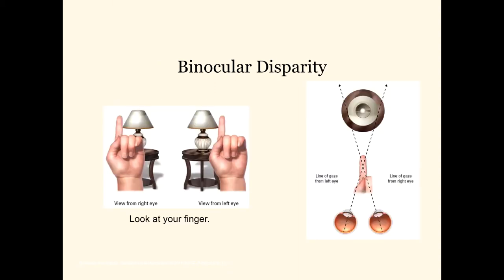Let's do a demonstration. Look at your finger — just hold it out in front of you and cover up one eye at a time, and you'll see that the image changes. That's because each eye is in a different physical location and as a result gets a different view of the world around us. That creates binocular disparity: the image the left eye receives is different from the right eye in that the relative location of objects is going to be different.